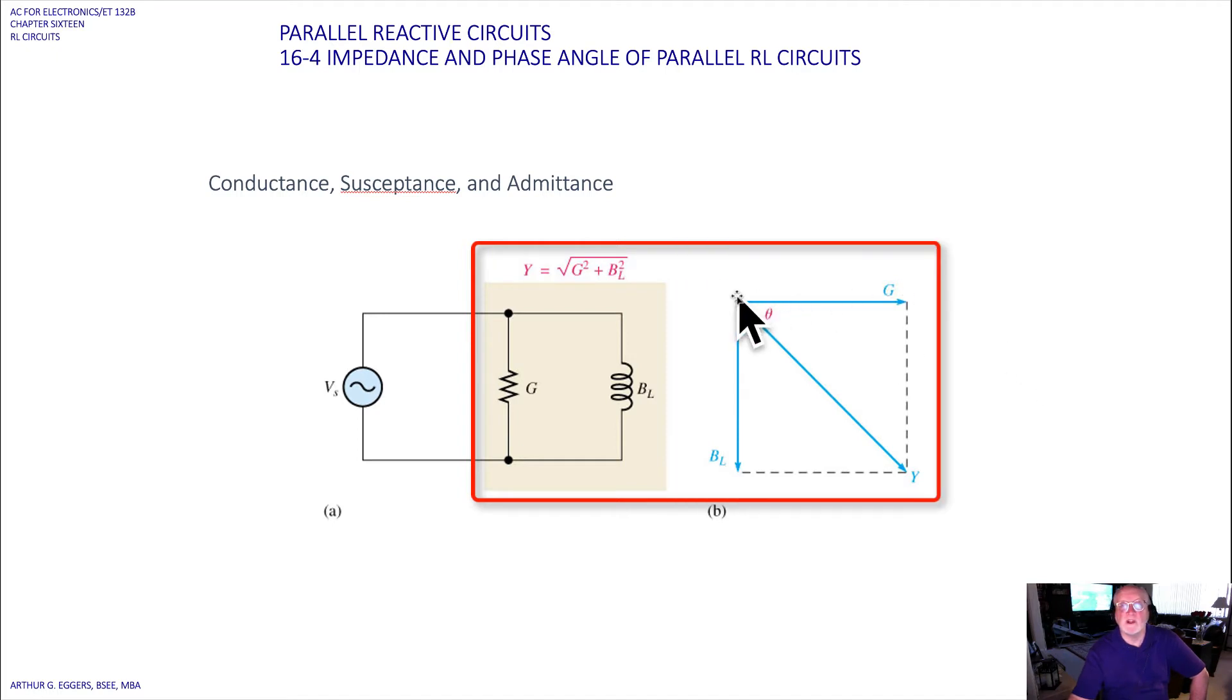We can see the phasor diagram then is showing us the conductance, just like the resistance along the x-axis, B sub L just like X sub L on the negative y-axis, and our resultant or hypotenuse of the right triangle then Y is the magnitude and angle of the result of combining those two terms into a polar form.